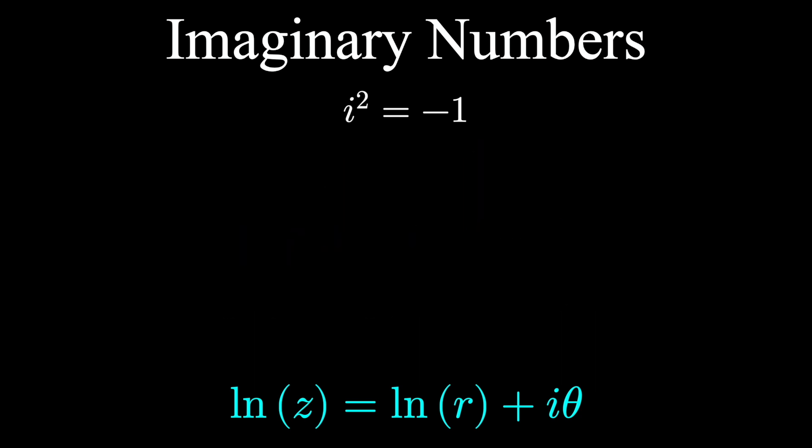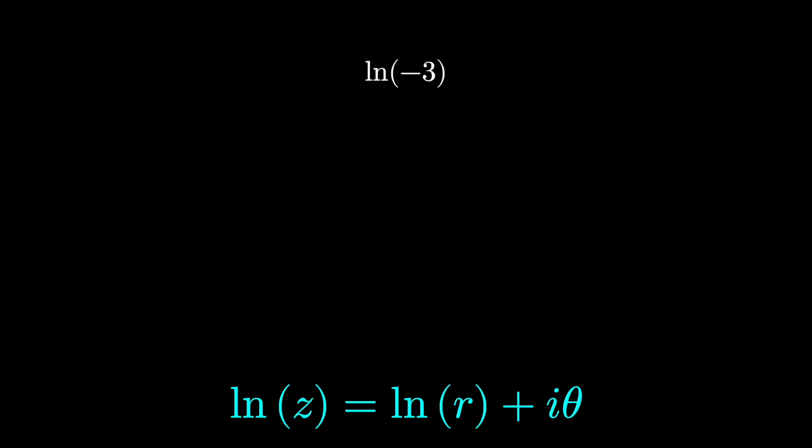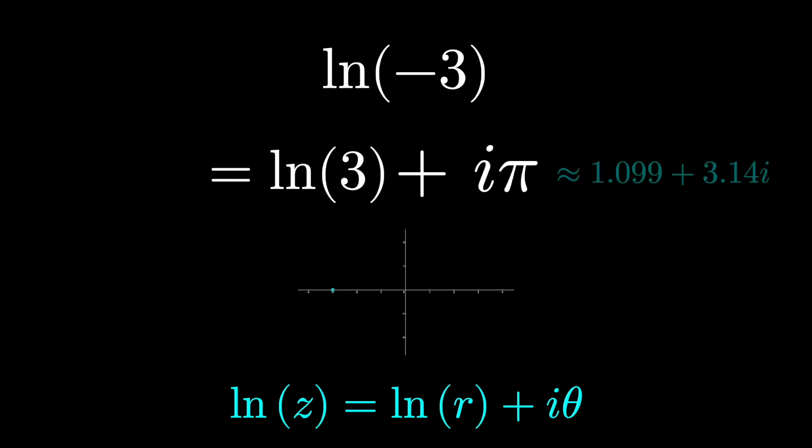Then to find the natural logarithm of any negative real number, it's just the natural logarithm of that positive real number, since the negative number is a distance of the positive number from the origin—that's r in this case—and we add on i times π. That's because the negative real axis is an angle of 180 degrees counterclockwise from the positive x-axis, which is π radians.